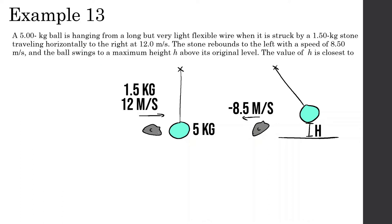We have a 5kg ball hanging from a long but very flexible wire when it is struck by a 1.5kg stone traveling horizontally to the right at 12 m/s. The stone rebounds to the left with a speed of 8.5 m/s and the ball swings to a maximum height H above its original level.